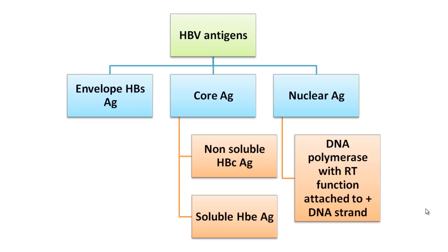The DNA polymerase in this virus is attached to the positive DNA strand. Since it is a partially double-stranded DNA virus, the complete strand is the minus strand and the incomplete or partial strand is known as the plus strand. The DNA polymerase enzyme is attached to the plus strand and has two functions: it acts as a DNA polymerase as well as a reverse transcriptase. These are the four main kinds of antigens.